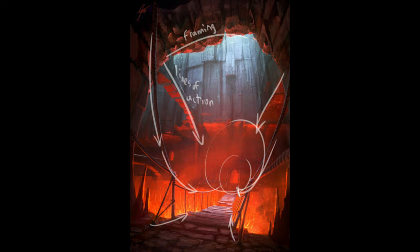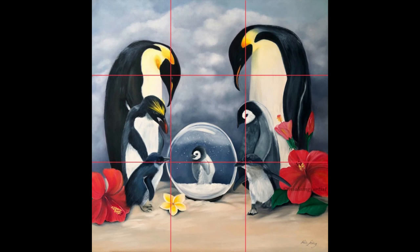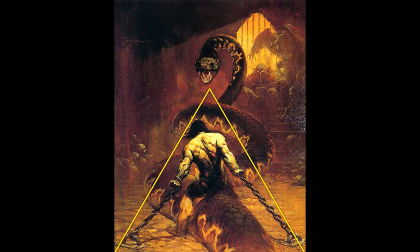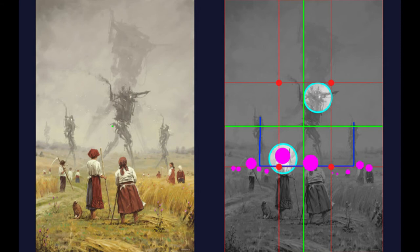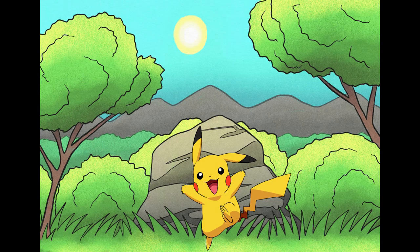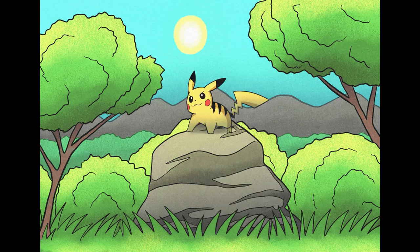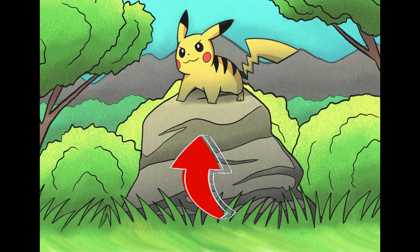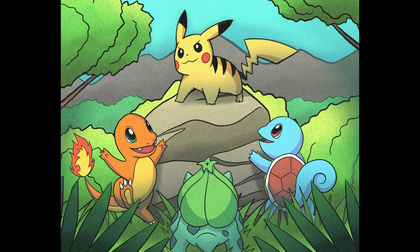When brainstorming what background to draw, one of the first things you should determine is your focal point — what's the main idea, where do you want viewers to focus, who or what is the center of attention? Once you determine that, decide the angle or perspective you want. Here we have Pikachu sitting on a rock with viewers looking up at him, and we can add foliage and other Pokémon looking up at him to draw attention to our focal point.